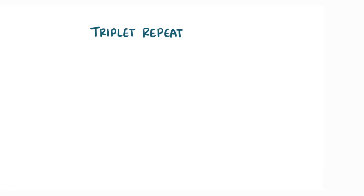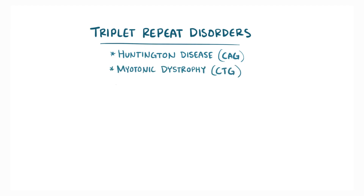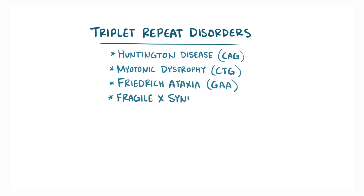There are actually several dozen other triplet repeat disorders in addition to Huntington disease, some of which also have CAGs as the repeated nucleotides but in a different gene. Others have different repeats, like myotonic dystrophy, which is a CTG repeat; Friedreich ataxia, a GAA repeat; and fragile X syndrome, a CGG repeat.